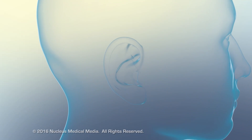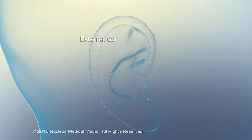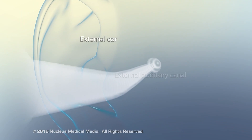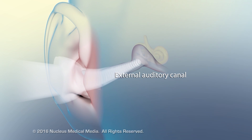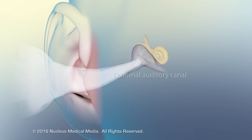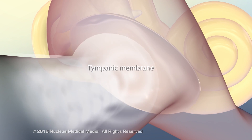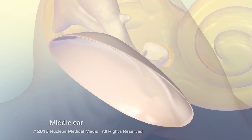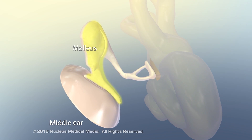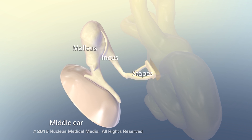Hearing begins with the external ear funneling sound waves through the external auditory canal to the tympanic membrane. The tympanic membrane vibrates in response to the sound waves. Three connected bones, called the malleus, incus, and stapes, transmit the vibrations through the middle ear.